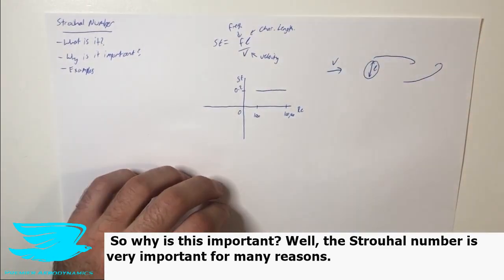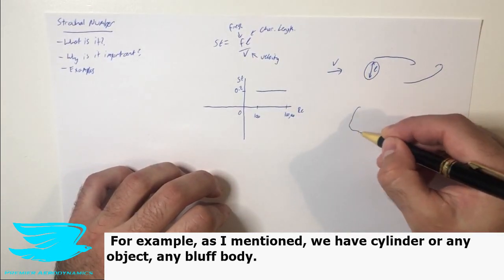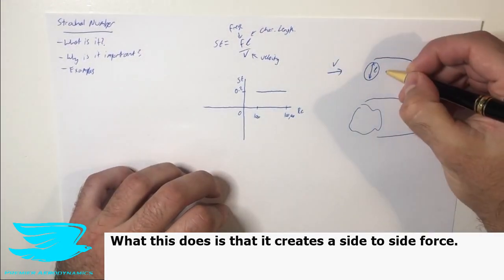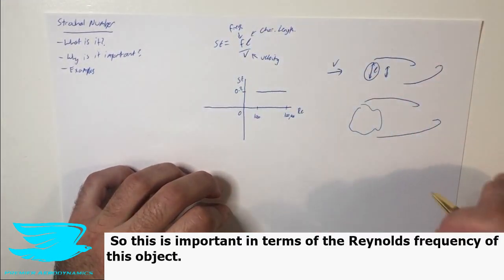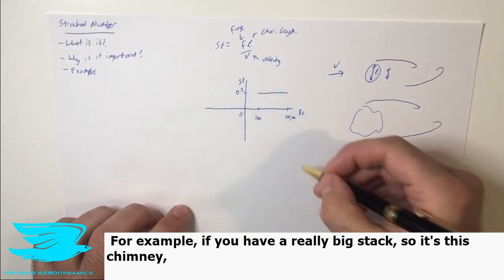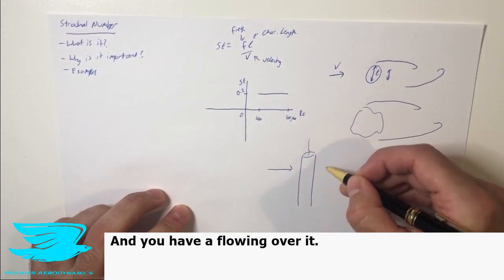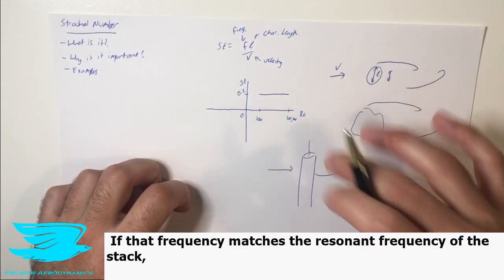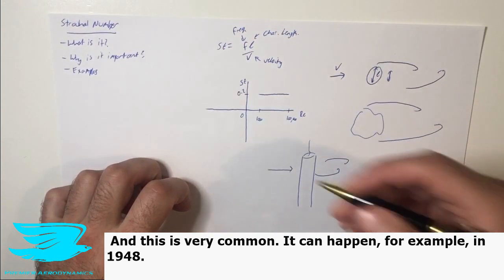So why is this important? Well, the Strouhal number is very important for many reasons. For example, as I mentioned, we have a cylinder or any object, any bluff body. We usually get a periodic vortex street, so this vortex shedding coming off here. What this does is that it creates this side-to-side force, and this shedding occurs at a certain frequency. So this is important in terms of the resonance frequency of this object. For example, if you have a really big stack, so smoke coming out, this chimney, and smoke coming up, and you have a flow going over it, this chimney will then start to shed these vortices, and it'll start to wobble from side to side. If that frequency matches the resonant frequency of the stack, that can then result in this amplification of this motion until it finally breaks.